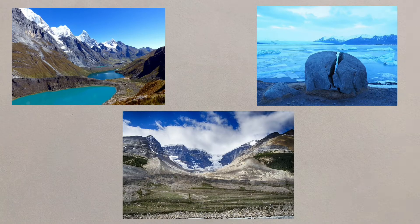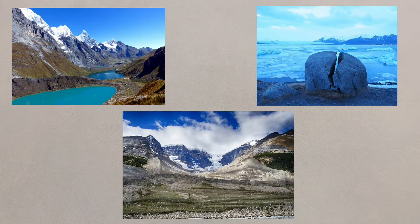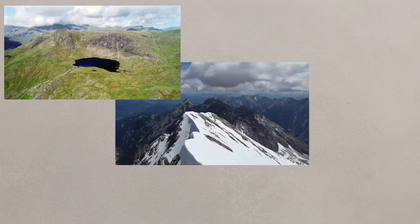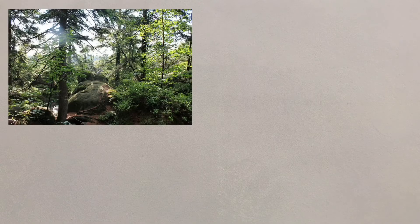Erosion processes create distinctive glacial landforms, such as corries, aretes, pyramidal peaks and more. Transportation and deposition results in landforms also, such as erratics and types of moraine.